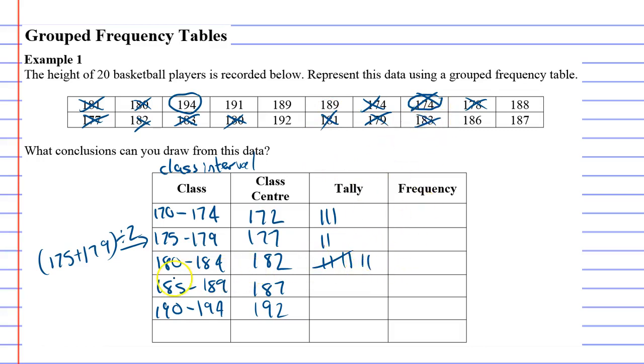185 to 189: one, two there, 186, 187, and 188, so one, two, three. And then we've got 191, 192, and 194, that's three there, one, two, three. They're all crossed off, so I'm quite happy with this. I think we've done it right.